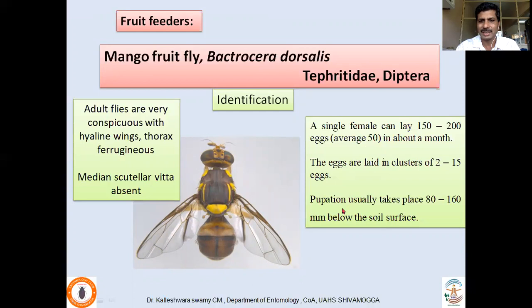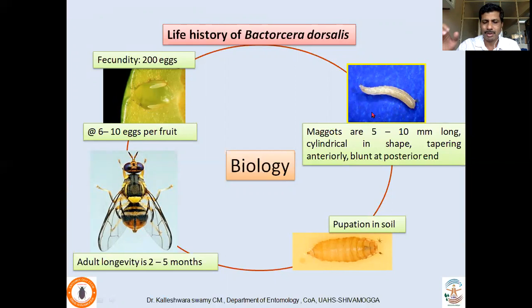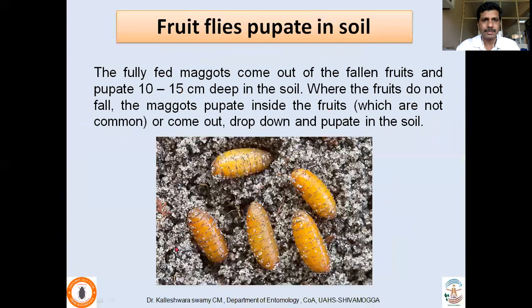Eggs are laid with a strong ovipositor inserted through the pericarp. The hatched maggot feeds on the pulp. The maggot is tapered at one end and blunt at the posterior end, and feeds with its mouth hooks. Pupation occurs in soil — this is a commonly asked examination question. Adult longevity is 2 to 5 months. The fully matured maggot comes out of the fruit, jumps, falls into the soil, and pupates at a depth of about 10 to 15 cm.